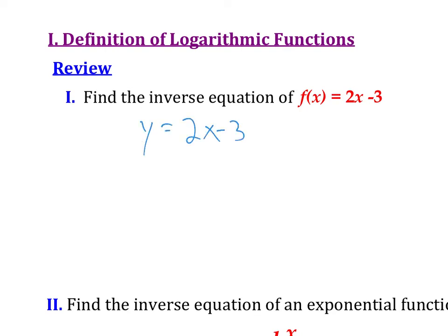If I had the function 2x minus 3 and I wanted the inverse, well I just switch x and y. And then my goal is to get y by itself. So I'd add 3 to the other side, I'd divide everything by 2, and there I go, I have an inverse function.